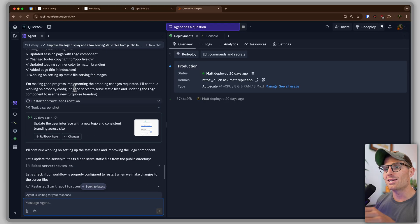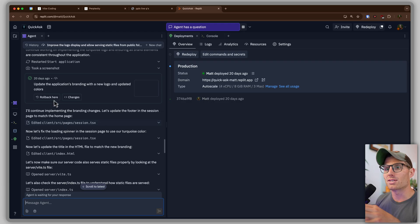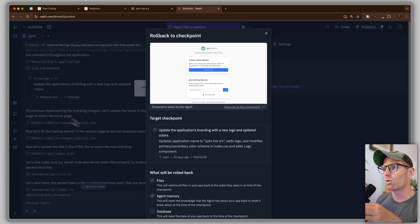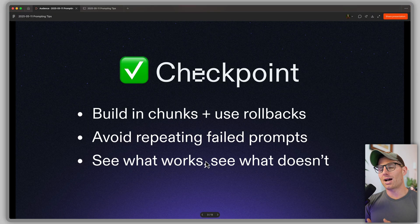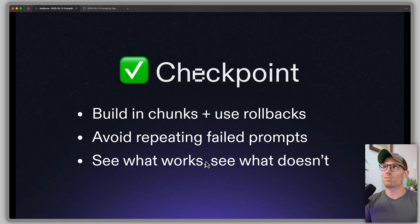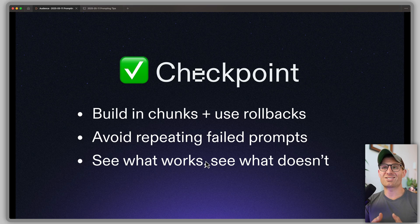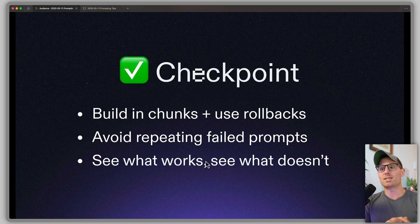On the left here, we can see the checkpoints that the agent's making as it builds. At any time, I can click roll back and restore not only the files or agent's memory for the application, but actually the database and the data the application's built on. I never have to worry about messing anything up or losing data. If you're building with another tool, this is just like Git — just use version control to save your files so you can go back at any time.